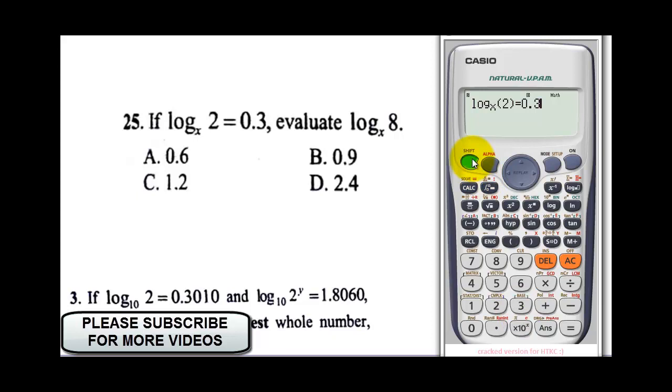Now the first thing we need to do here is to solve for X. So I'll press shift and press solve. So it to tell me, do you want this to solve for X? Now this minus 0.6 you're seeing here is an initial value of X I solved. So don't bother about that. Press equal to.